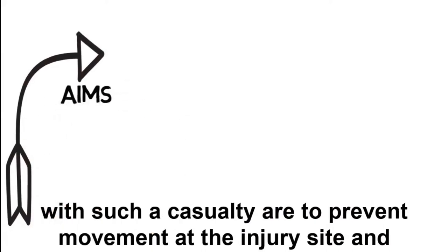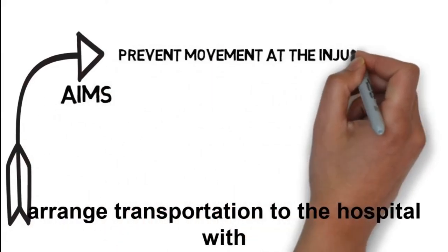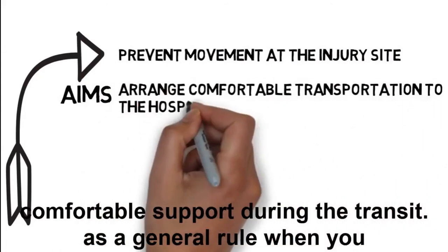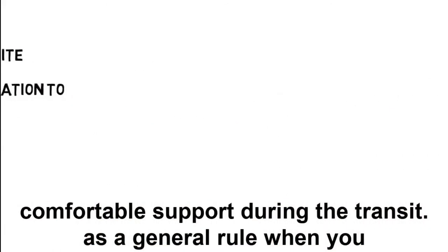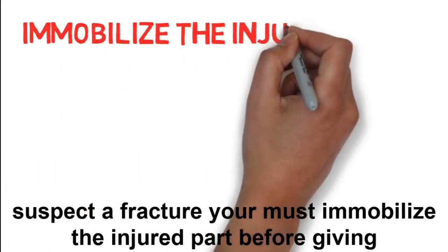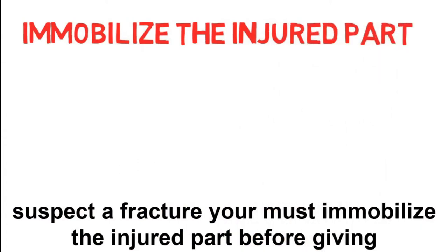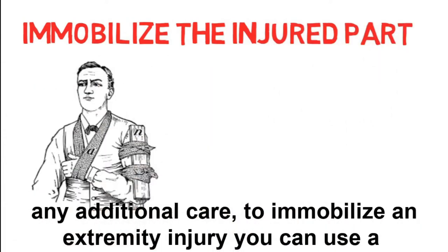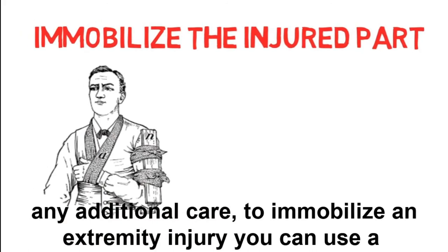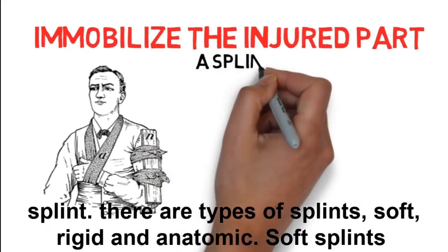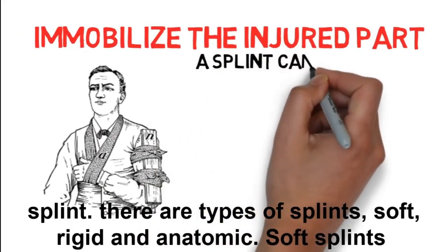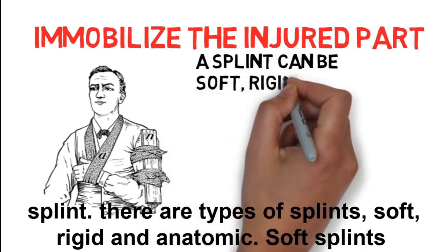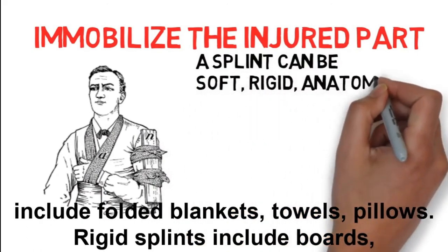Your aims are to prevent movement at the injury site and arrange transportation to the hospital with comfortable support during transit. As a general rule, when you suspect a fracture, you must immobilize the injured part before giving any additional care. To immobilize an extremity injury, you must use a splint.